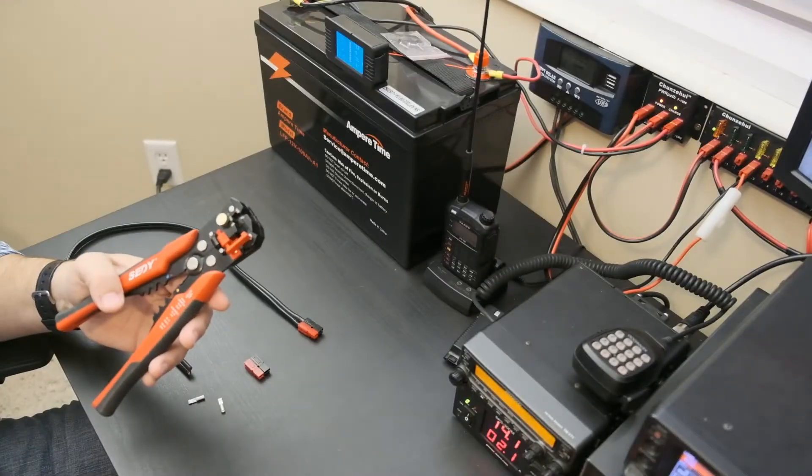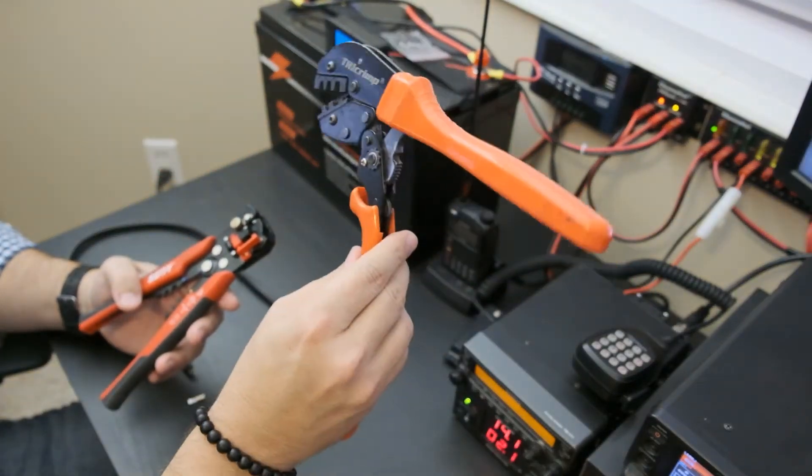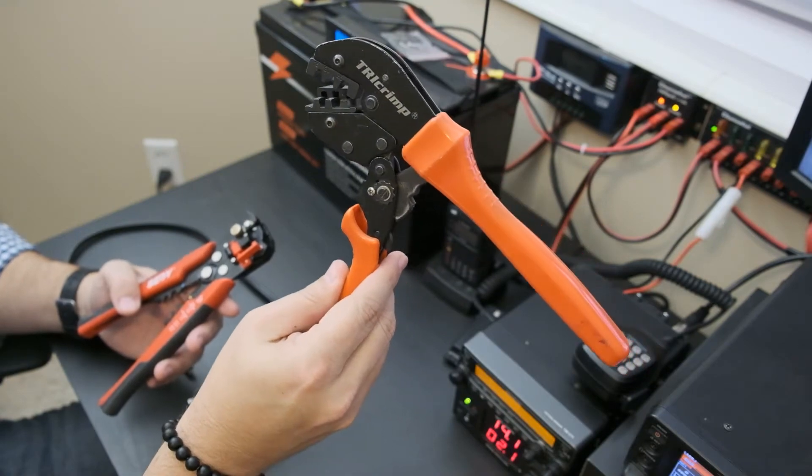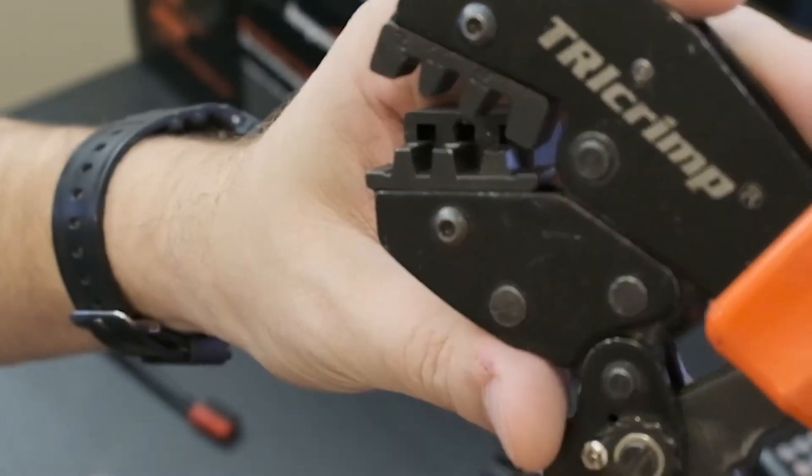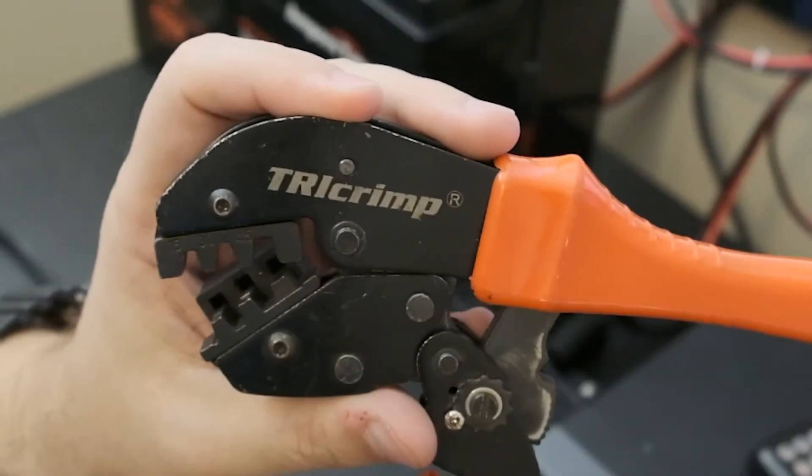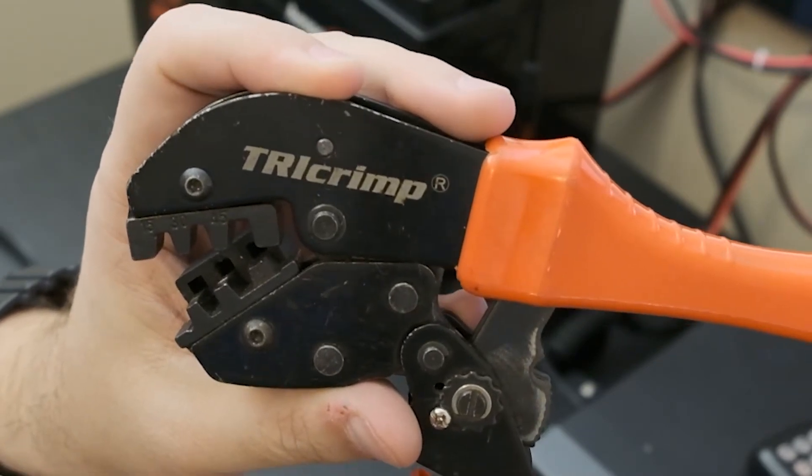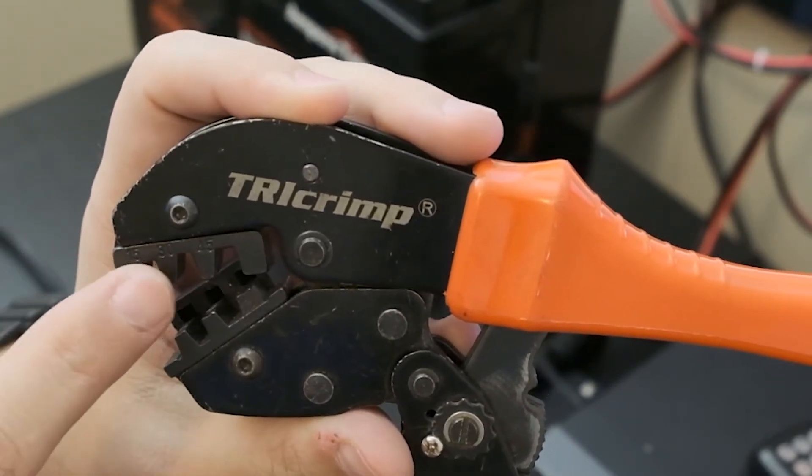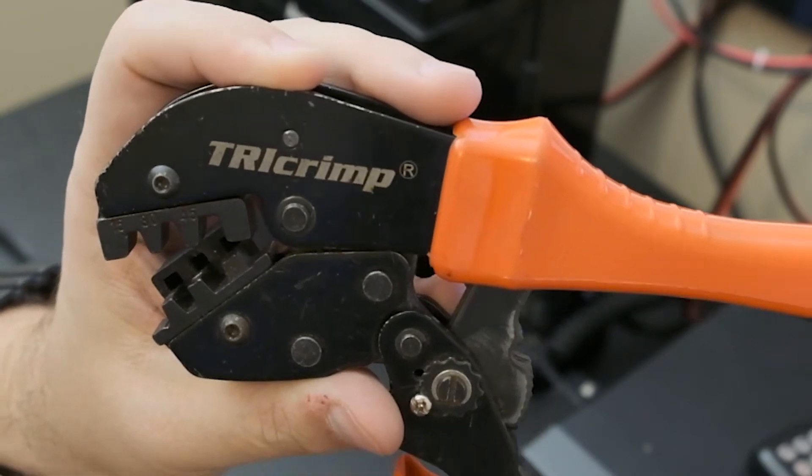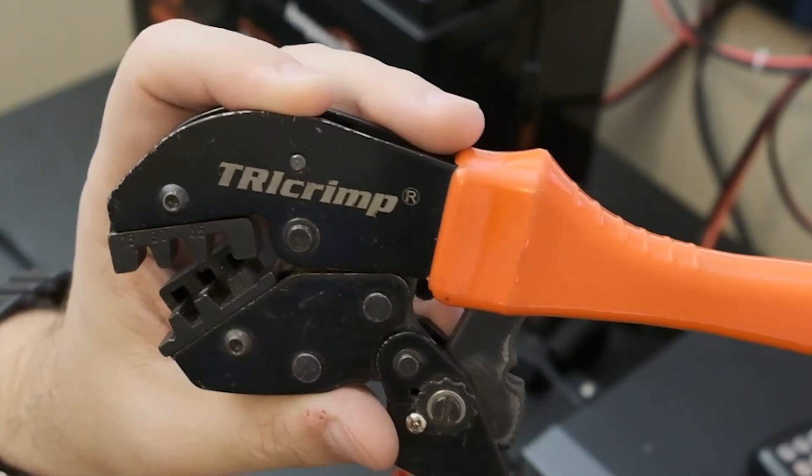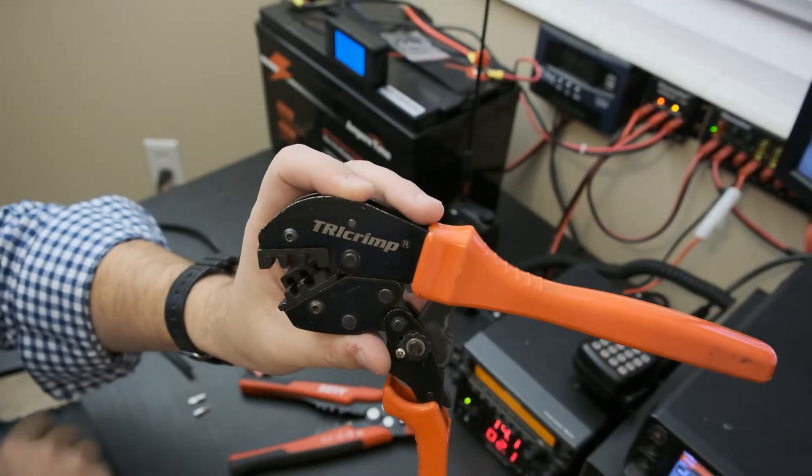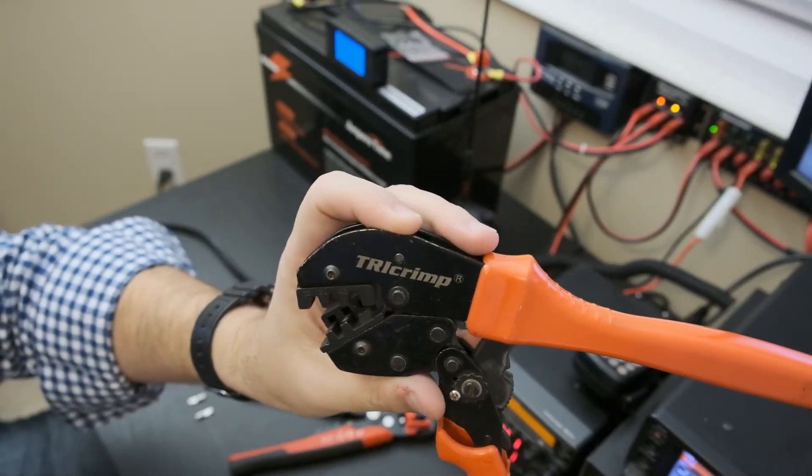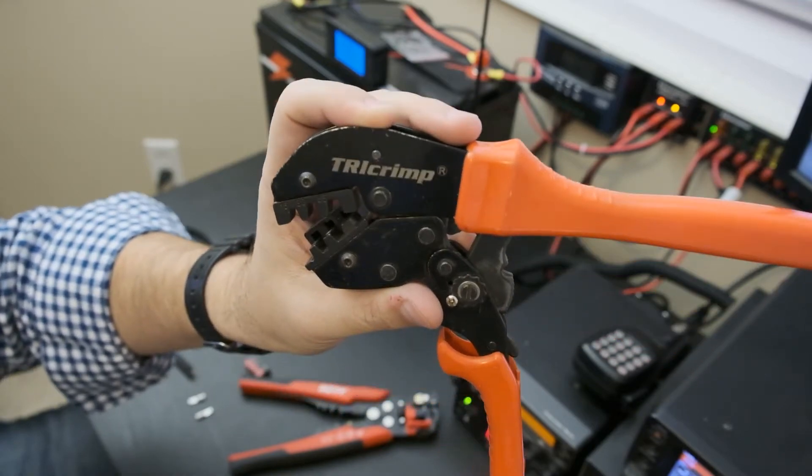The other thing that we're going to need is a crimper. This crimper is made specifically for power poles. And you can see this die right here. It has three different settings in it. And so, I don't know how well you can read it, but it says 15, 30, and 45. That's for the different amp rating types. We happen to have 30 amp types here. These are 30 amp connectors. And so, that's what we'll be using. We'll be using that middle die in order to create the crimp. But let's go ahead and let's strip our wire.